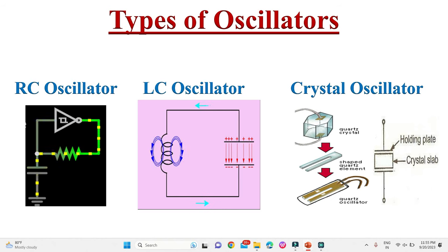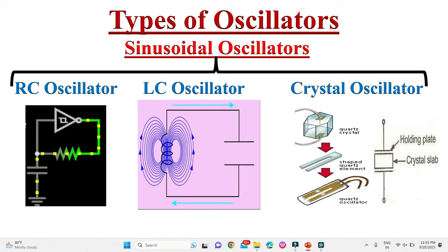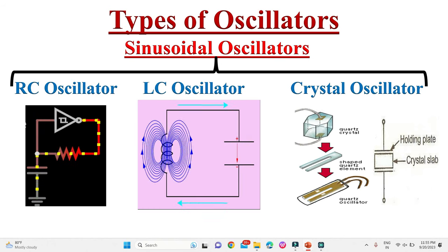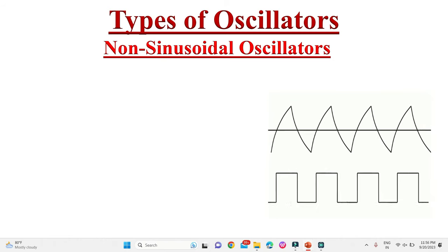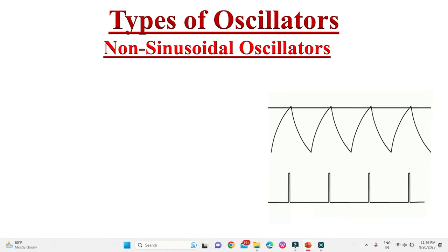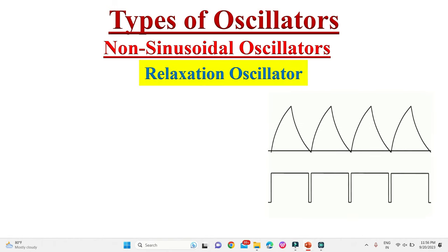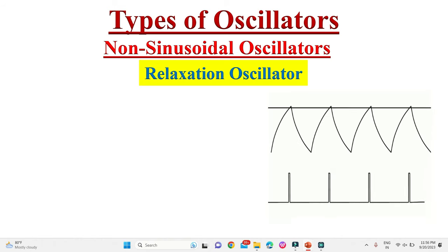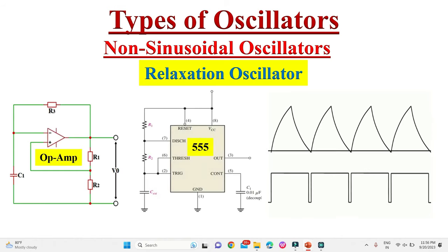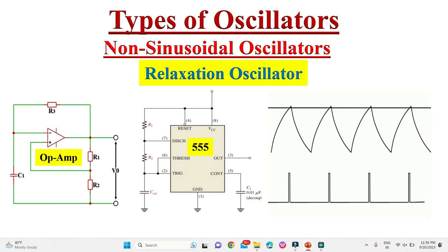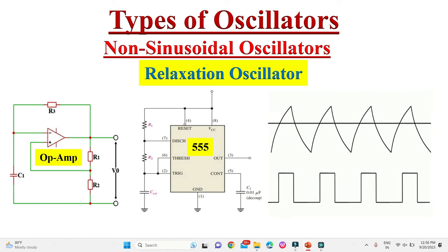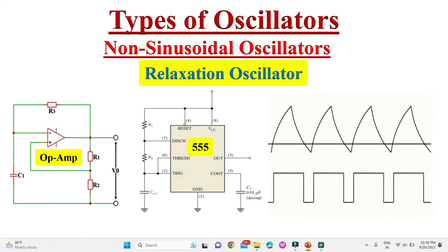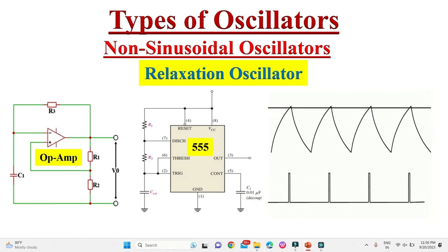The oscillators mentioned here are sinusoidal oscillators, because their outputs are sinusoidal waveforms. Some oscillators provide different kinds of waveforms like square waves and triangular waves — these are known as relaxation oscillators. Relaxation oscillators can be designed using op-amps or timer ICs like the 555 timer. We will discuss the design of various types of oscillators in upcoming videos.